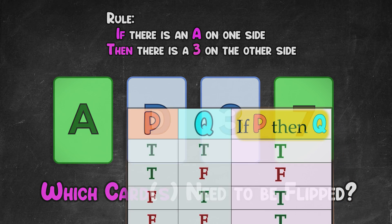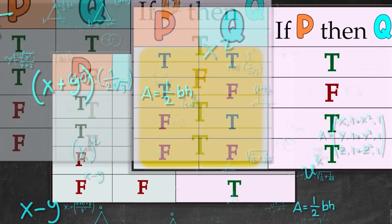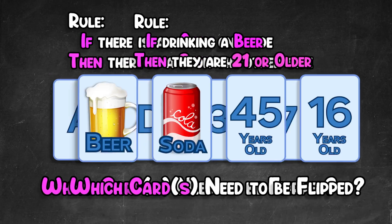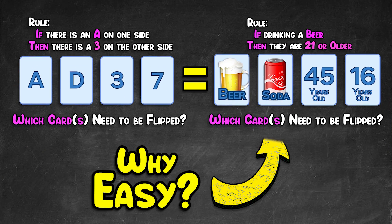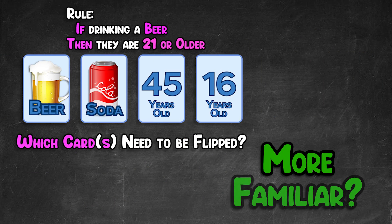Well, now it makes sense why we all get this problem wrong. Who figures all that out on the fly? But then, why was the second example with the beverages easy to figure out? Maybe because it just happened to be a more familiar scenario. Well, what if I said we could change people's answers without even changing the problem?